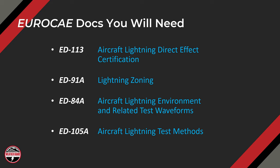The four documents are: ED-113, Aircraft Lightning Directive Certification; ED-91A, Lightning Zoning; ED-84A, Aircraft Lightning Environment and Related Test Waveforms; and ED-105A, Aircraft Lightning Test Methods. Each one has specific information you're going to need for compliance with CS25.581, so you need to gather the whole group.